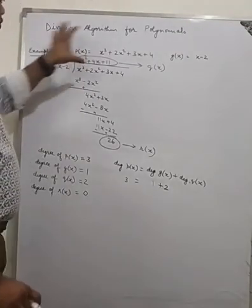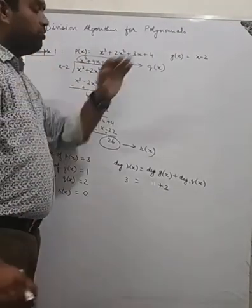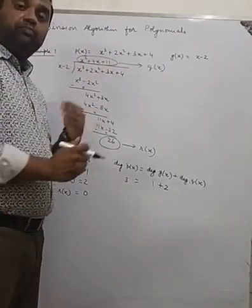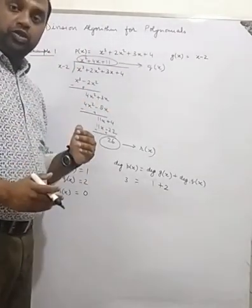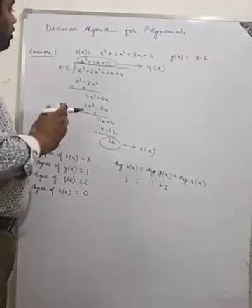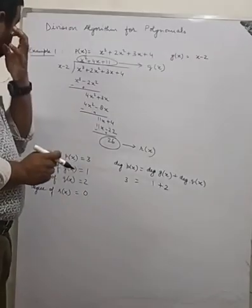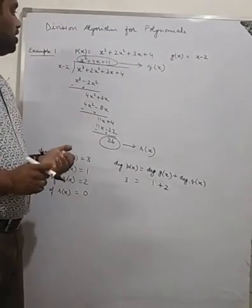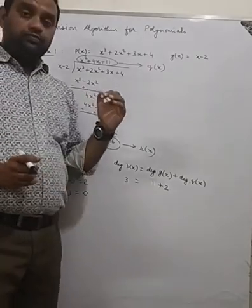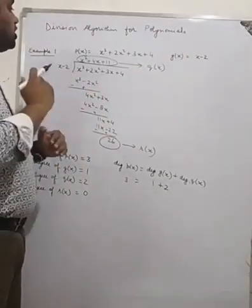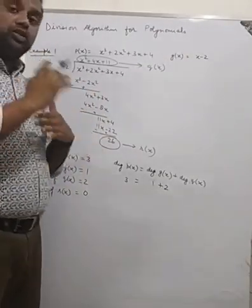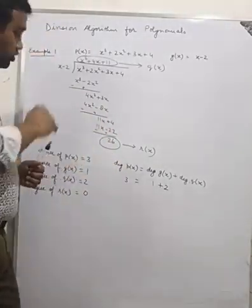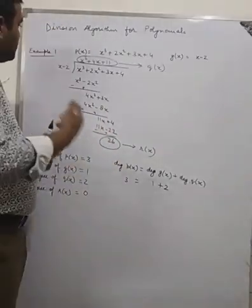Now this polynomial was a cubic polynomial, but here in this chapter we are going to study bi-quadratic polynomials — that is, polynomials of degree 4. Let's take another example where we will find the other zeros when 1 or 2 zeros are given.